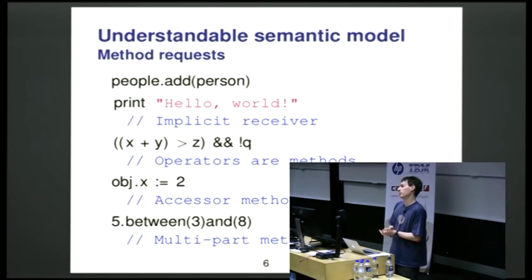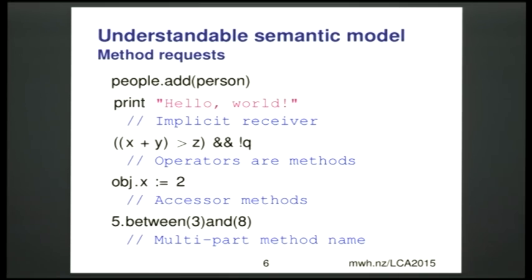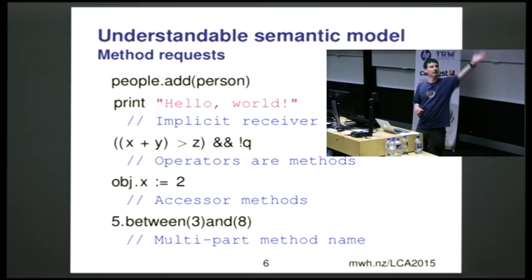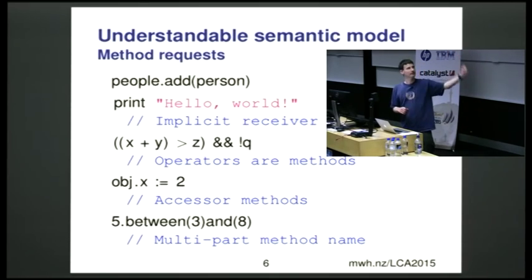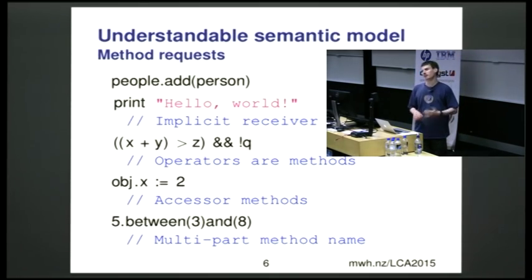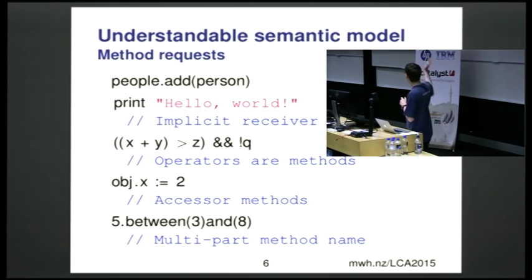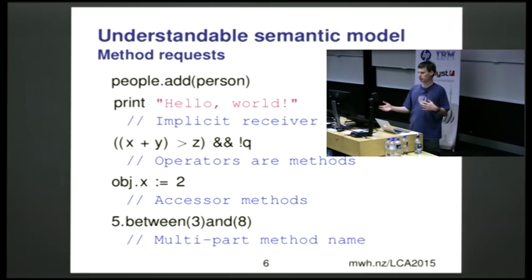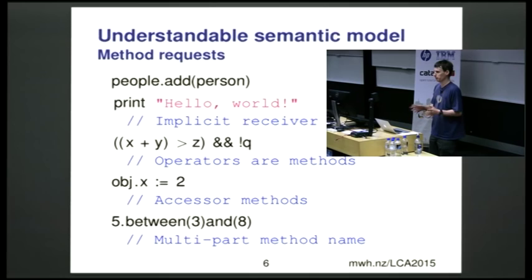We want an understandable semantic model. Grace is an object-oriented language, so to keep our semantic model simple, everything is an object. There are no primitive types. Everything you can do with those objects is a method. You can have dotted method calls, implicit receivers, operator methods — infix binary and prefix unary operators. Field accesses are also message sends, method requests — all of them go through the same dispatch semantics.